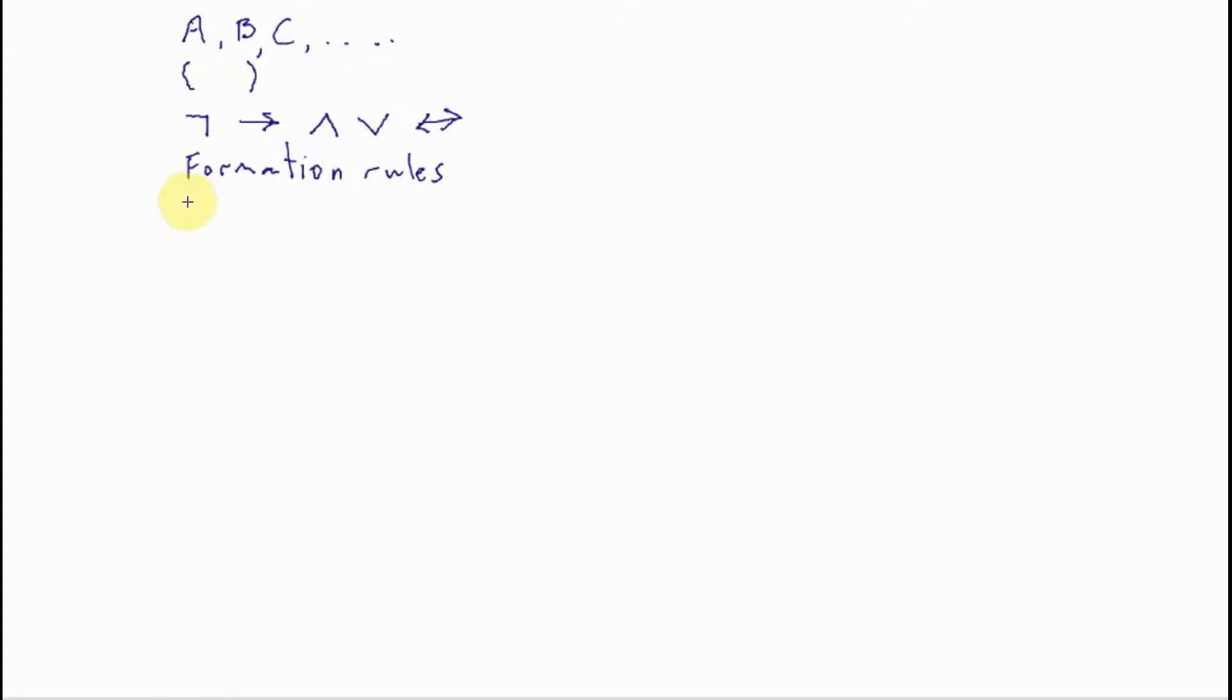What else do we have? We have our inference rule, our inference rule of modus ponens. Now, together we're going to call these three elements of the calculus: our vocabulary of symbols, our formation rules, and our inference rule of modus ponens. Together, we're going to call these three elements the language.